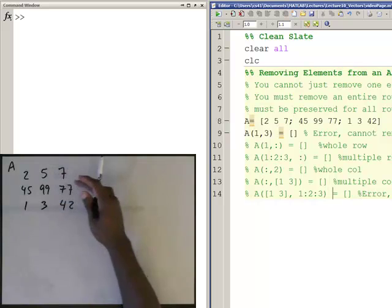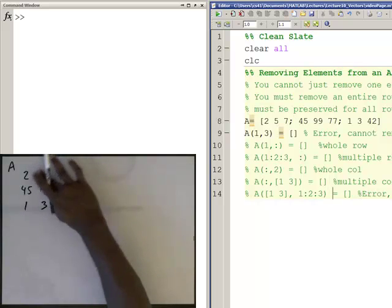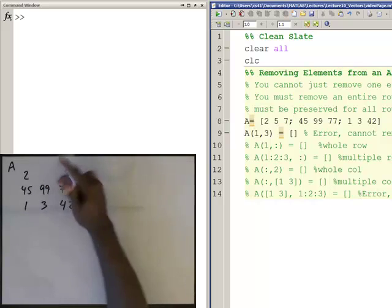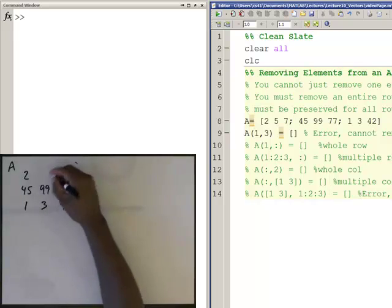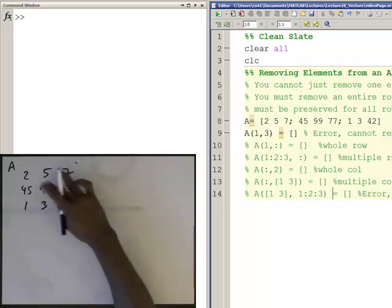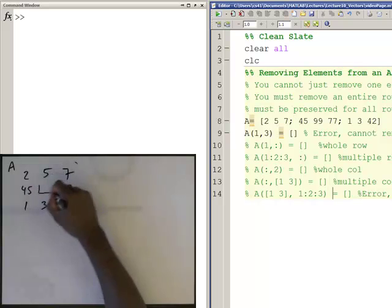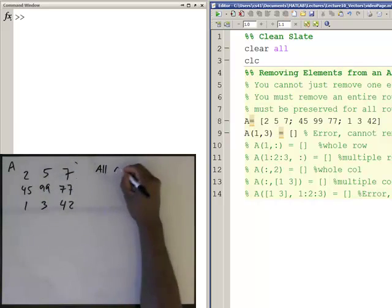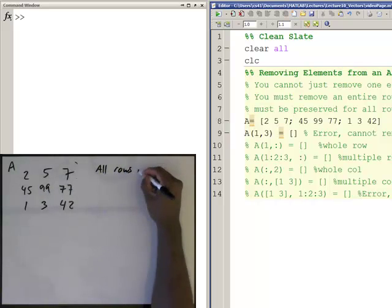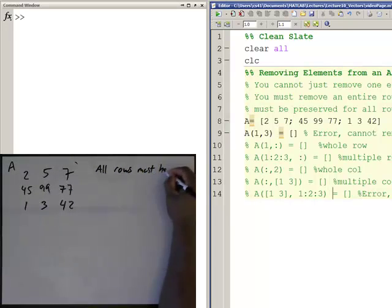In other words, I cannot remove one element and have an array that has a hole right there. I can't remove one element and have an array that has a hole anywhere. I can't create a hole in the middle. All rows have to have the same number of columns and all columns have to have the same number of rows.